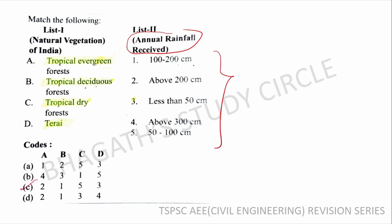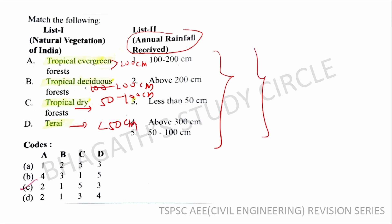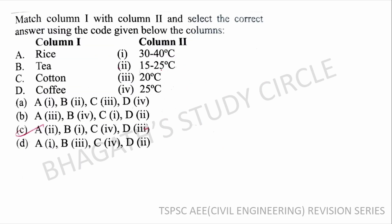Regarding precipitation and forest types: tropical evergreen forests receive above 200 cm rainfall; tropical deciduous forests receive 100 to 200 cm; dry forests receive 50 to 100 cm; and desert or arid regions receive less than 50 cm of rainfall.